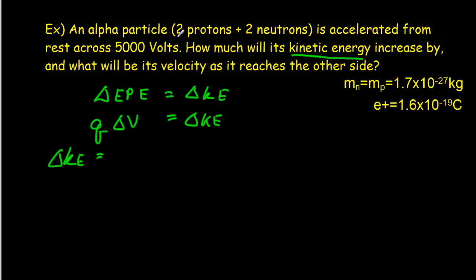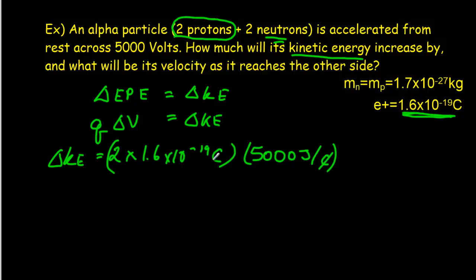So delta KE is going to equal the size of the charge. Well, this is an alpha particle, and alpha particles have two protons in them. Of course, the neutrons have no charge. An alpha particle is just the nucleus of a helium atom. So it's a helium atom with the electrons ripped off. So the two protons, they each have an elementary charge. So our total charge there will be 2 times 1.6 times 10 to the negative 19 coulombs. And of course, we're accelerating it across 5,000 volts or 5,000 joules per coulomb. You notice here the coulombs will cancel out. So we'll get a value in joules for our kinetic energy. And if we multiply that out, we get a value of 8.0 times 10 to the negative 16 joules.